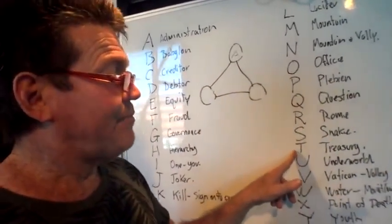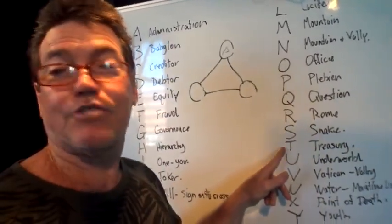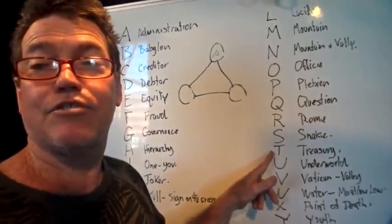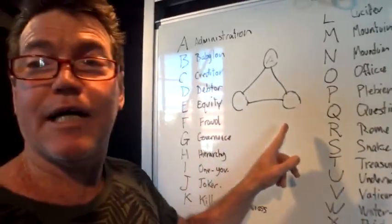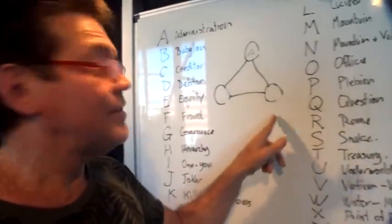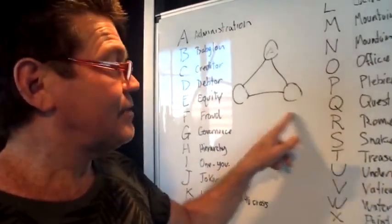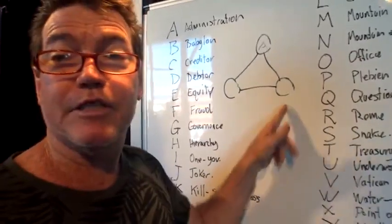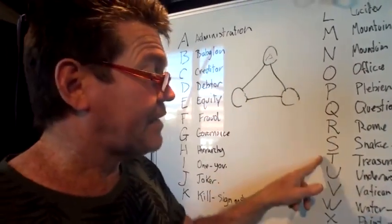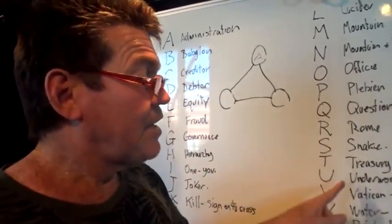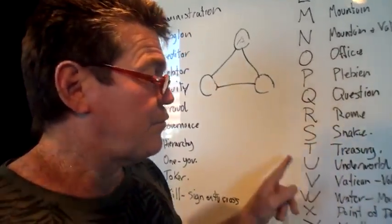T — the treasury. The trust, like a ledger — a debtor and creditor — and people working in administration will understand that symbol. U — the underworld, which is the world of the dead, below the surface.